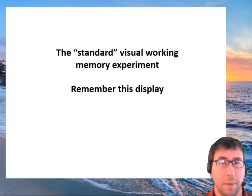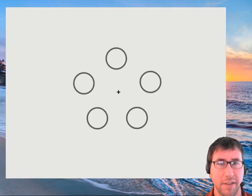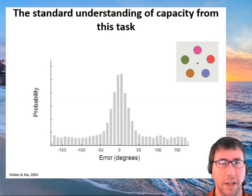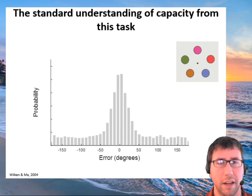To start, let's think about working memory. The standard working memory experiment looks something like this: you see some colors, they disappear, you're probed on one using a continuous color wheel, and you choose the color that you think it was. In this task, errors near zero would be very good, so this distribution shows lots of errors near zero and also a very long fat tail.